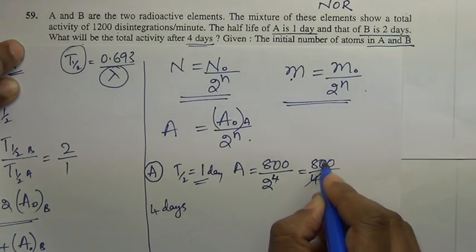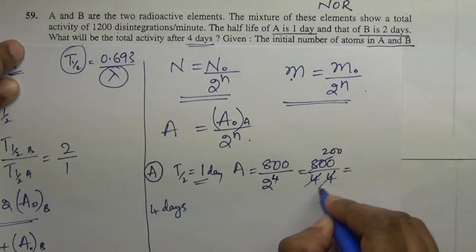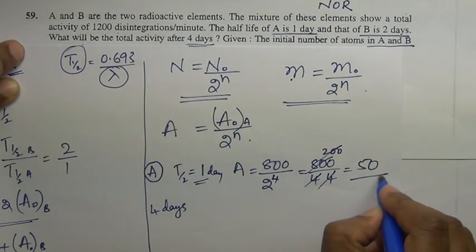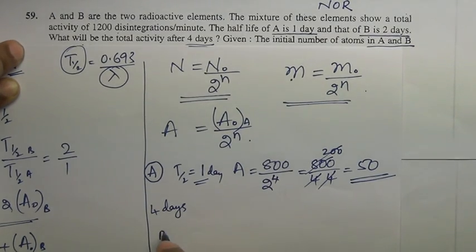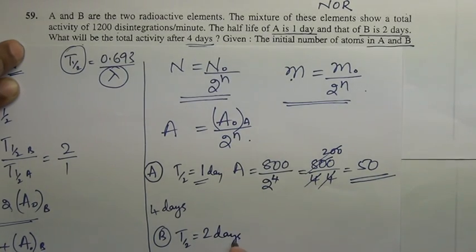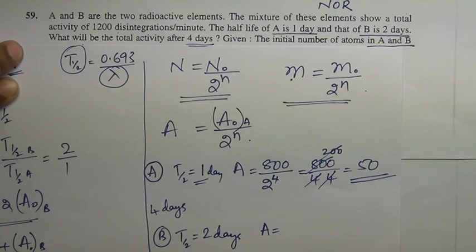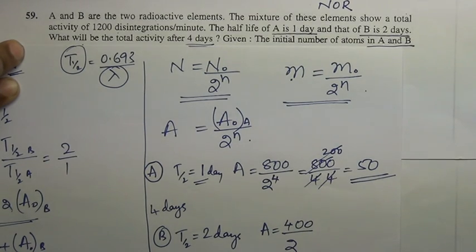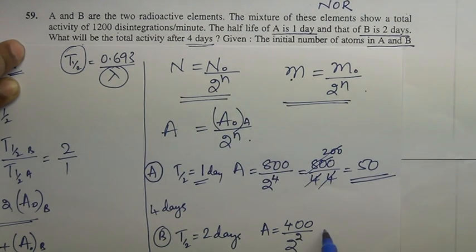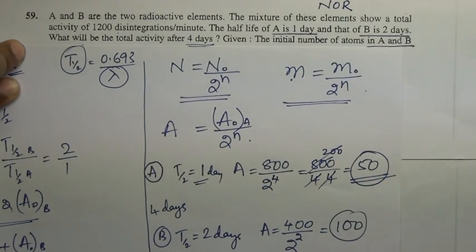For element B with half-life 2 days, after 4 days there are 2 half-lives. Activity of B equals 400 / 2² equals 400 / 4 equals 100. Therefore total activity after 4 days equals 50 plus 100 equals 150 disintegrations per minute.